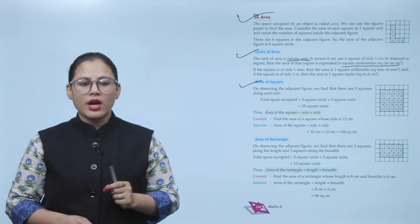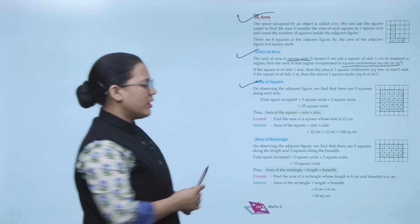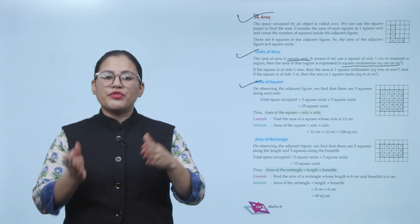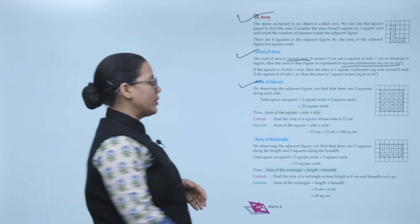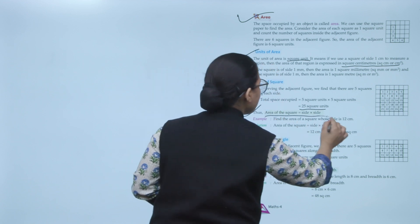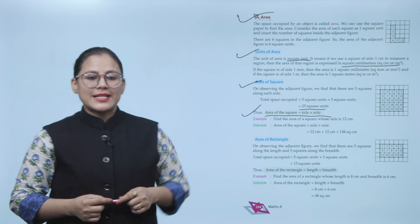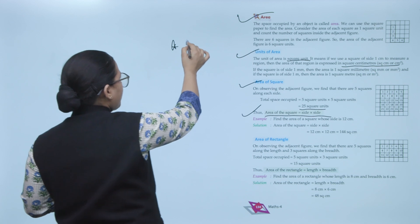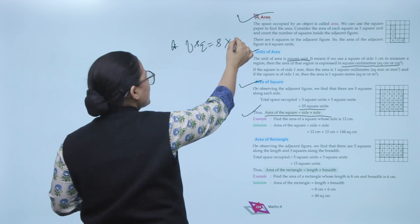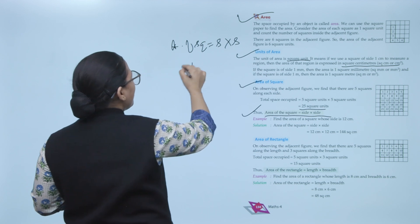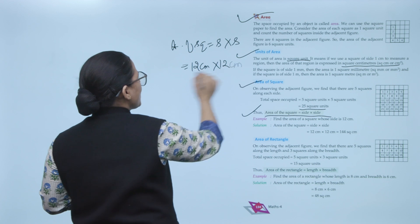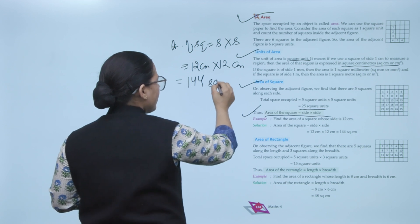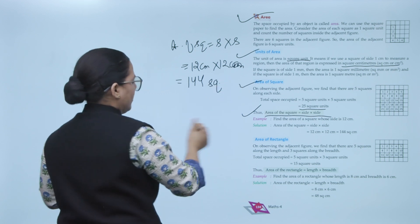Area of a square: observing the figure, there are 5 squares along each side. Total space occupied = 5 × 5 = 25 square units. Therefore, area of a square = side × side. Example: Find the area of a square whose side is 12 centimeters.